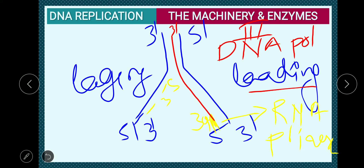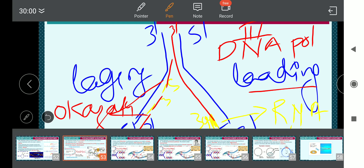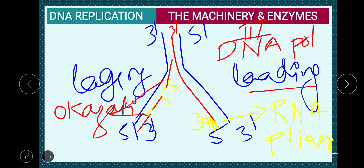On the lagging strand, multiple primers are added as very short stretches. Each primer provides a 3' end from which extension occurs. The next primer is added and extended, producing small stretches of DNA — these are the Okazaki fragments. DNA polymerase enzyme synthesizes each small stretch, and then DNA polymerase 2 enzyme comes in to remove the primers.